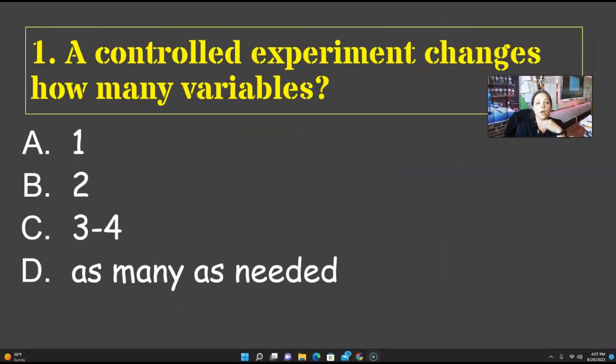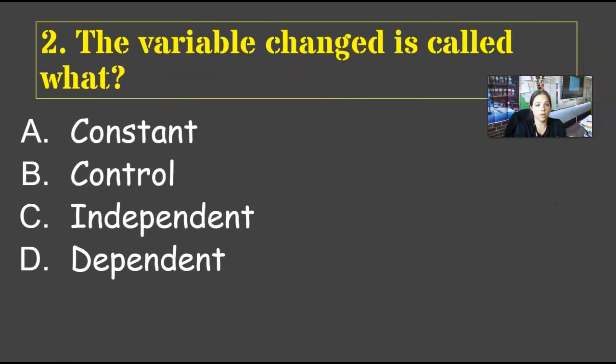A controlled experiment changes how many variables? A, one. B, two. C, three or four. D, as many as needed. Pause if you need to. Two. The variable changed is called what? A constant, B controlled, C independent, or D dependent. Pause if needed.